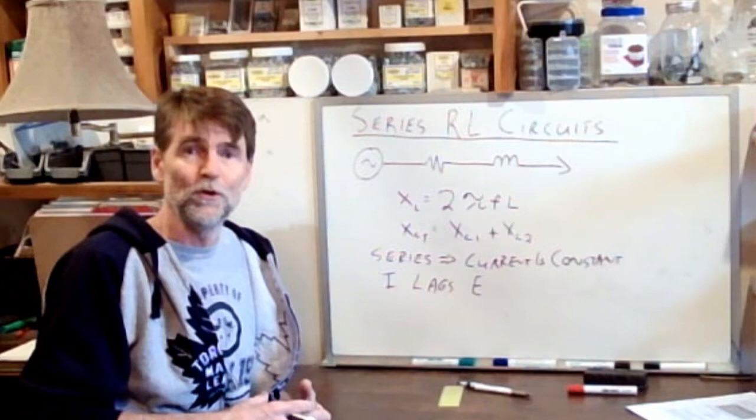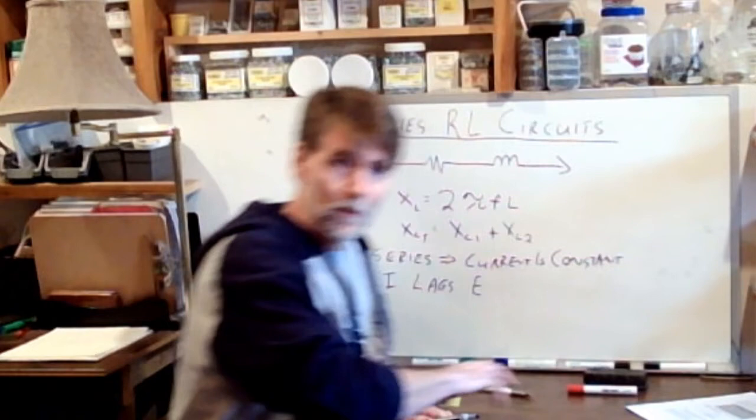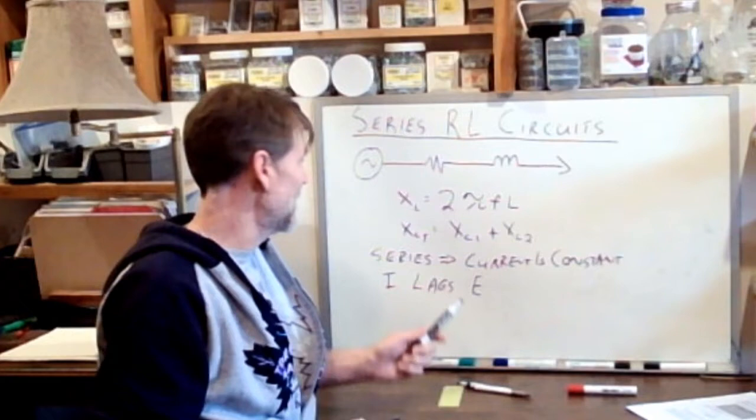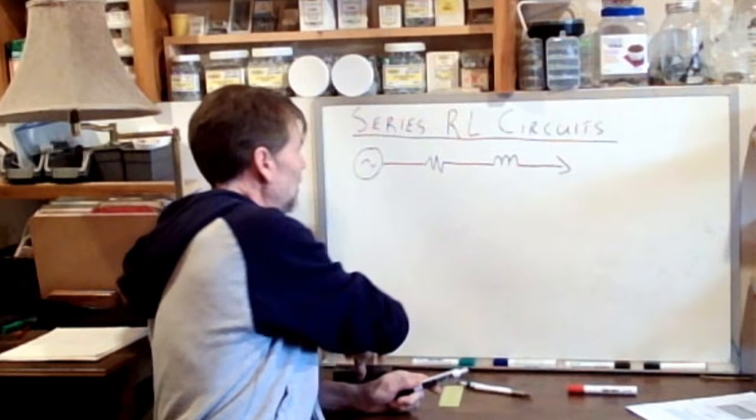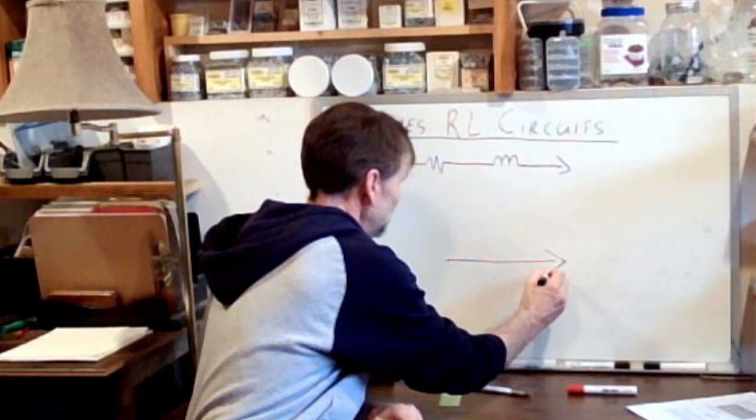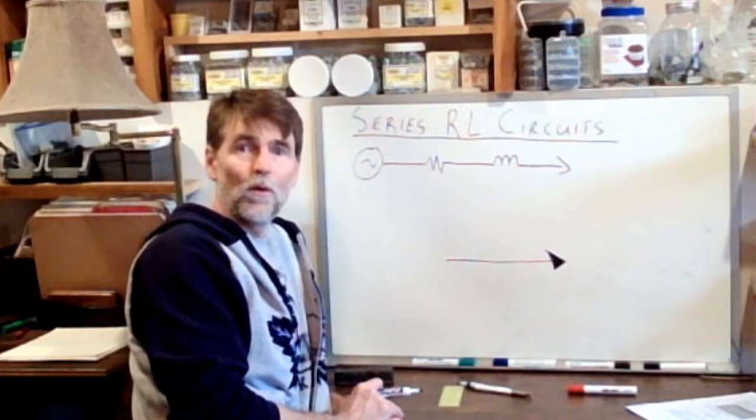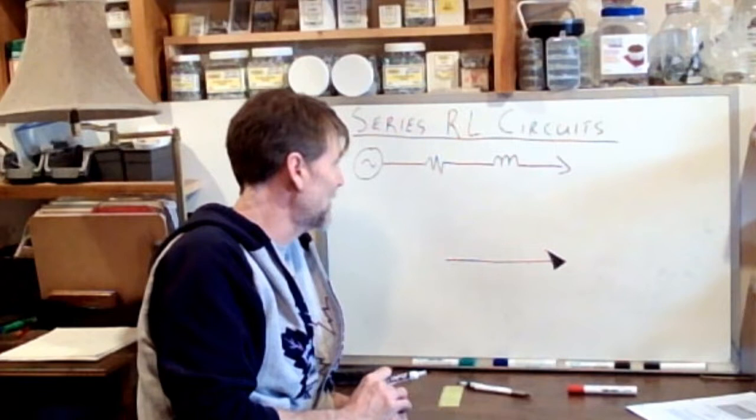And so that is the information that we need to build our understanding about the circuit. So one final thought here, I'm not going to go through the whole process of the math, but let's quickly build a triangle that would represent this circuit series RL. So the first point was that the current is constant. So that's where we begin our understanding. There's our current vector. We place it at zero degrees.